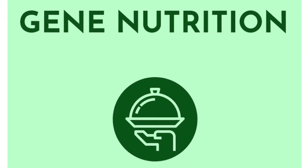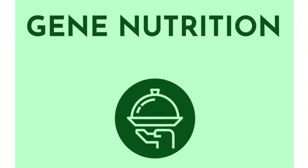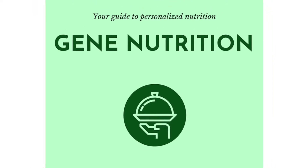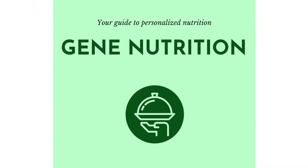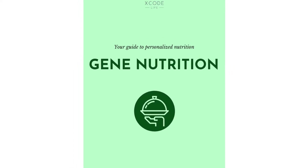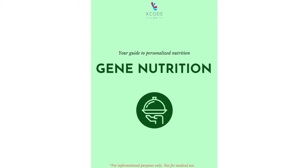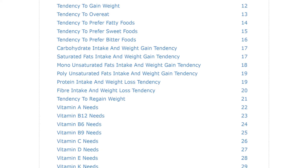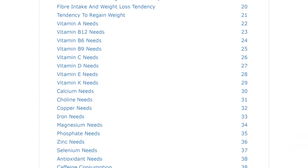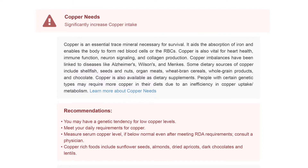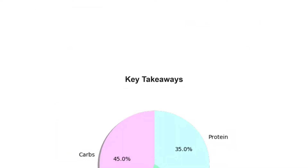The Gene Nutrition Report profiles genes that have been shown to influence nutritional traits like diet and weight management, micronutrient requirements, food intolerances, and several other attributes relevant to nutritional well-being. The table of contents lists all the traits covered in your nutrition report, and you can click on any entry from the list to learn more.